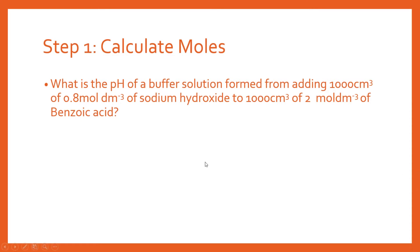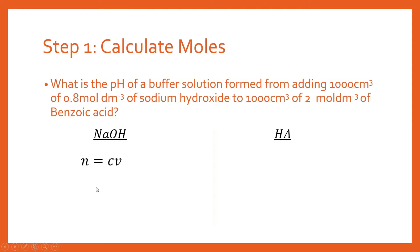We need to find the number of moles of sodium hydroxide and of benzoic acid. Benzoic acid is a weak acid, and for a weak acid we tend to use HA to represent any generic weak acid — all the formulae are based on HA, which will make things a little bit easier. We're going to split this into two: find the moles of NaOH, then find the moles of HA.